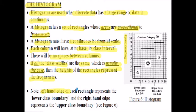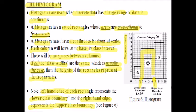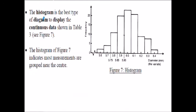The left hand edge of a rectangle represents what's called the lower class boundary, and the right hand edge represents the upper class boundary. The histogram is the best type of diagram to display continuous data. What we're going to do now is show how we can take the discrete data from the ball bearing tally chart and put it into a histogram, as shown in figure seven.